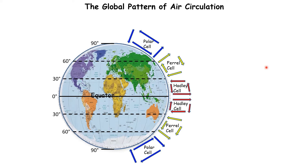What we can see here is the global pattern of air circulation — the way air moves around the planet. There are definite areas where air is rising: at 0 degrees and at 60 degrees. As we know, rising air leads to clouds forming and rainfall. This explains why Britain is quite a wet country, found at 60 degrees north where you get low pressure. It also explains why the equator is so wet, as well as 60 degrees south.